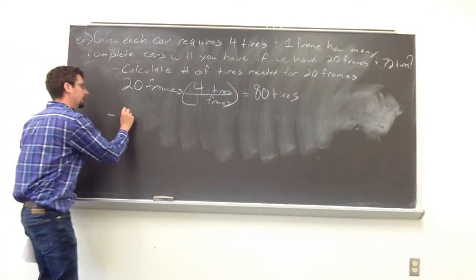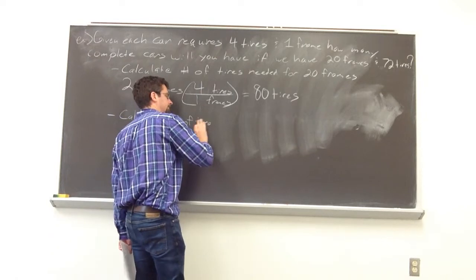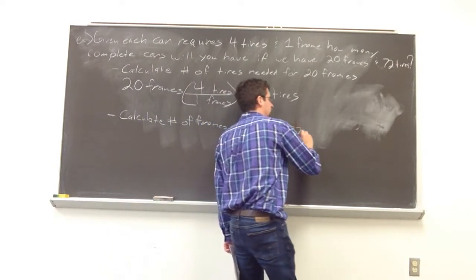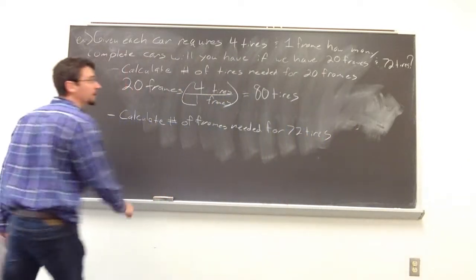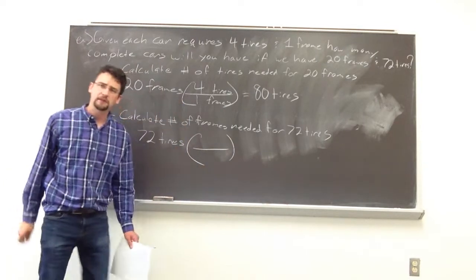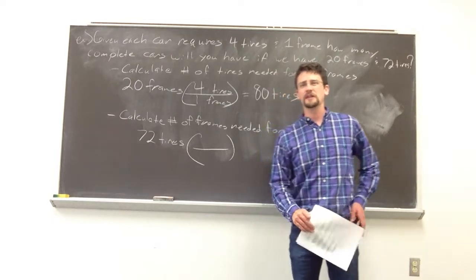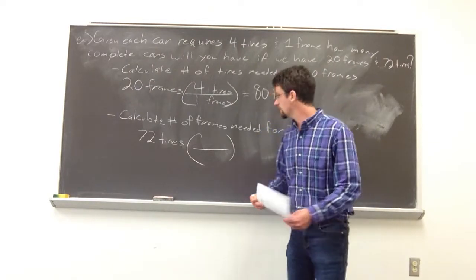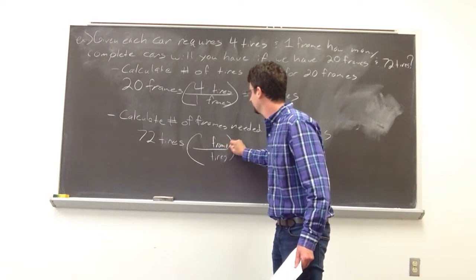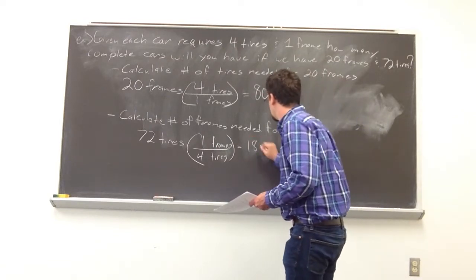Now let's calculate the number of frames needed for 72 tires. We have 72 tires and we multiply by a conversion factor — tires in the denominator, frames in the numerator. I always stress looking at units first, then plugging in numbers, as students often get confused doing numbers first. For every four tires we have one frame, so we divide by four and end up with 18 frames.